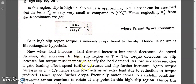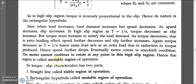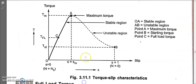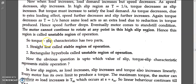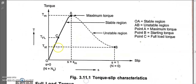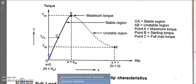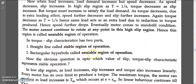As torque decreases, speed again decreases, which causes slip to increase further, which causes torque to decrease further. This cycle continues until the motor stops. So we cannot operate the motor in this region. If we operate above point A, the motor will eventually come to a standstill — speed will keep decreasing.